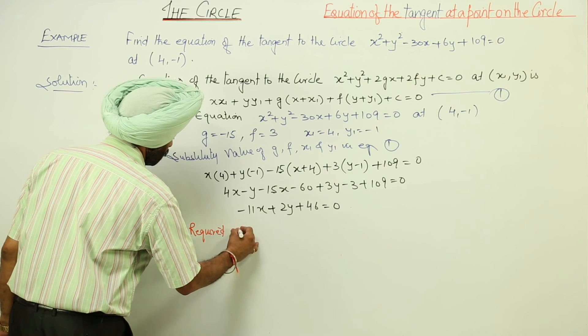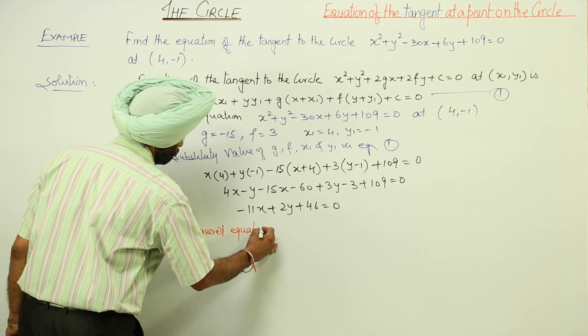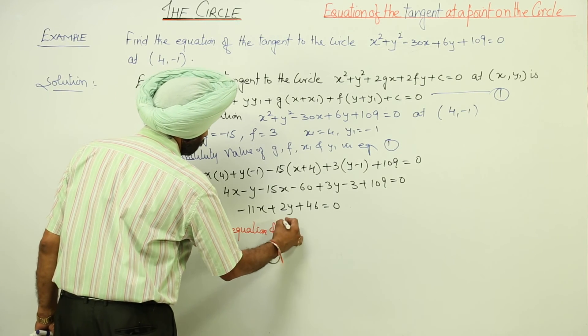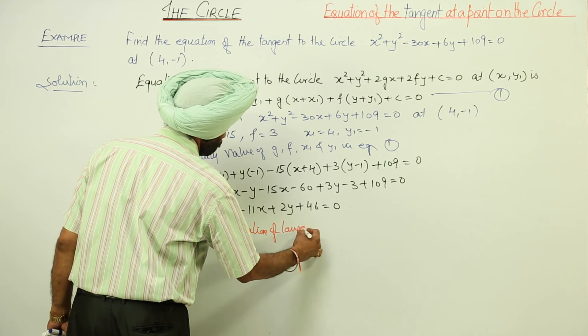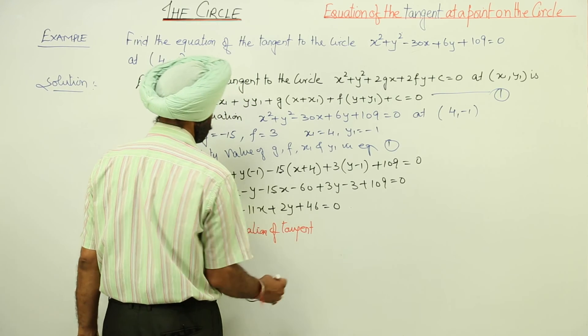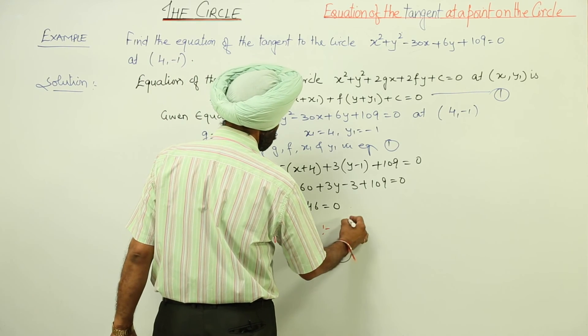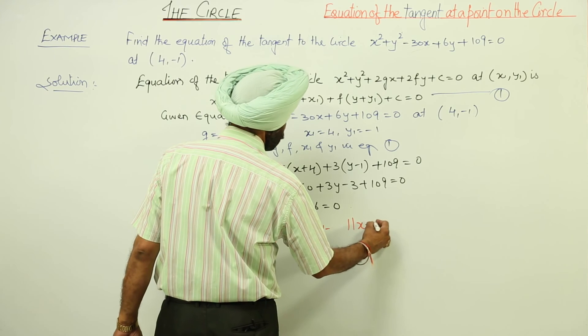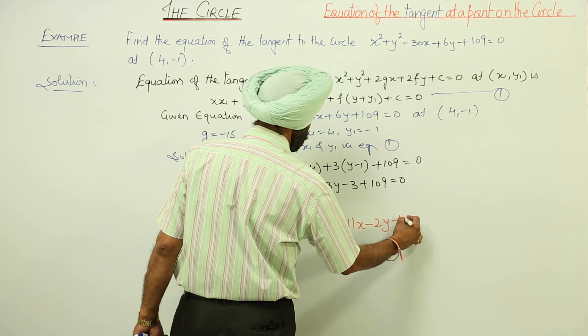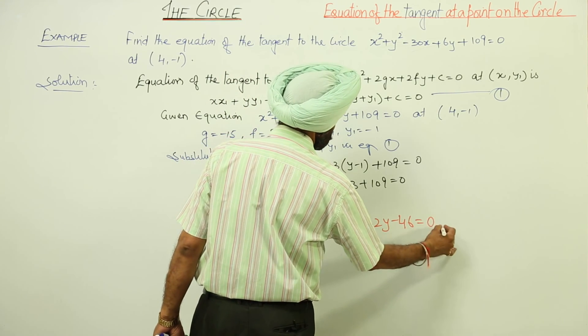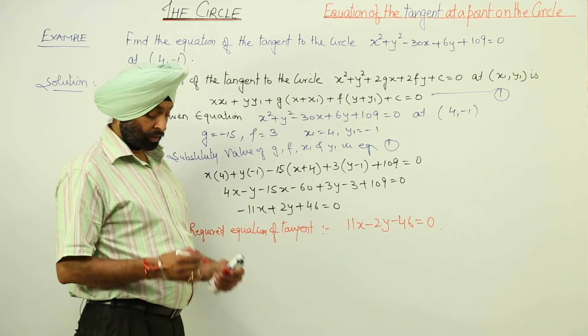So, required equation of tangent: 11x - 2y - 46 = 0.